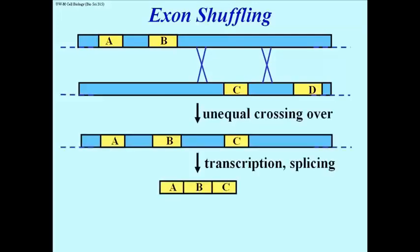After unequal crossing over, exon C in this example is now part of a gene that previously only had two exons, A and B. This is now a 3-exon gene. A 3-exon mRNA is made by splicing, and a protein then with a new domain will be translated.